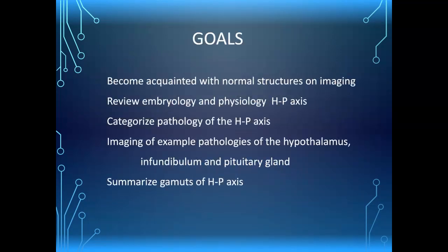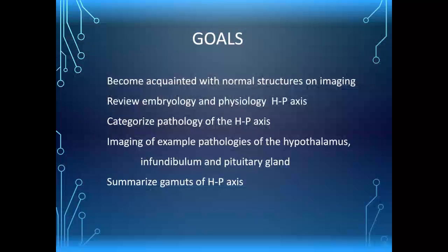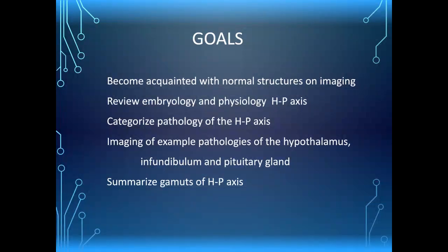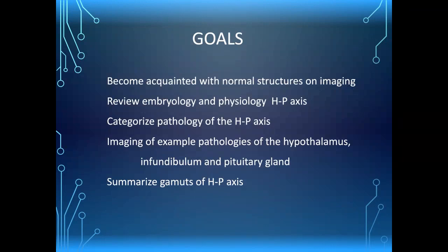Our goals are to become acquainted with the normal structures on imaging, then review the embryology and physiology of the hypothalamic-pituitary axis — which many of you will know quite well — but these things have consequences we pick up on imaging. We'll then categorize pathology of the hypothalamic-pituitary axis with imaging examples, dividing it into what happens within the hypothalamus, what's in the gland itself, and what's in the infundibulum and around the sella. I removed the gametes — differential diagnosis lists — to stay within the time limit.